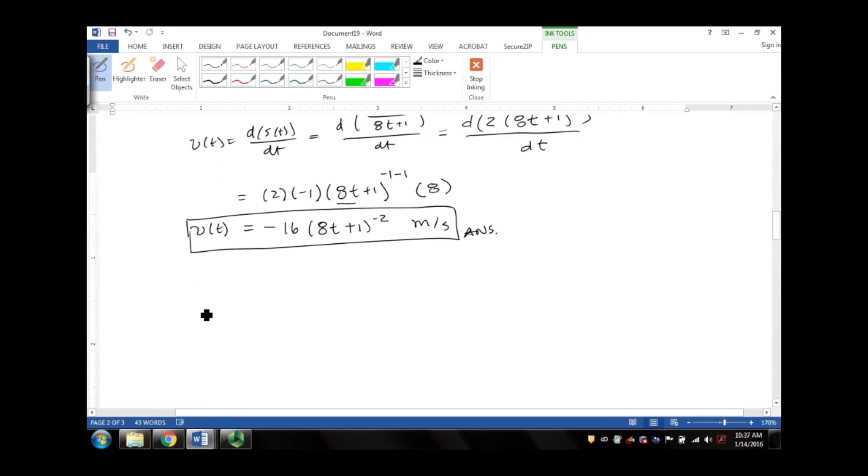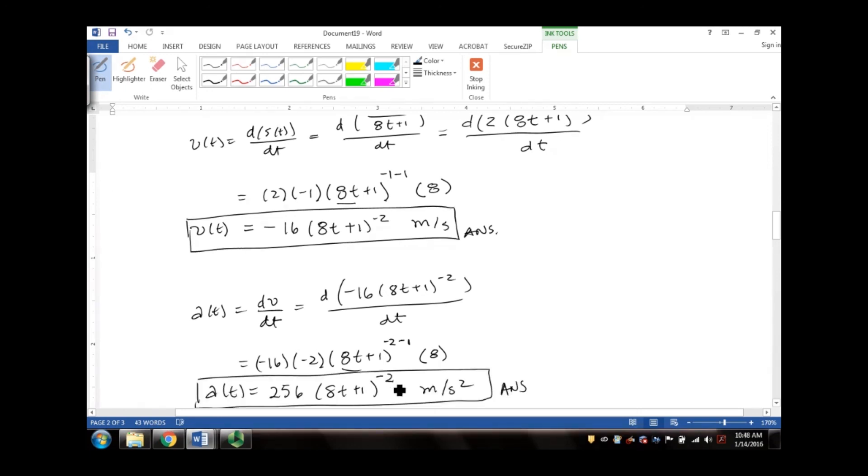Now in order to find a(t), it would just be dv/dt, which would then be the derivative of negative 16(8t + 1)⁻² with respect to dt, which would be negative 16, carry down the exponent, and then (8t + 1)⁻²⁻¹, and then take the derivative of 8t which would be 8. We simplify this and it turns out to be 256(8t + 1)⁻³.